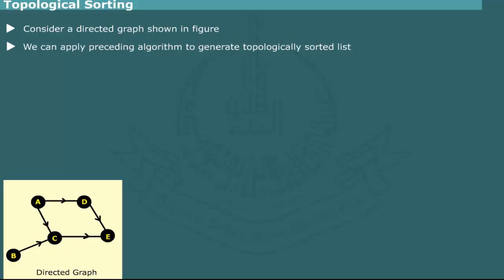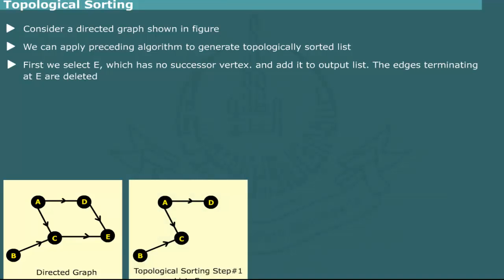Since E has no successor vertices, we select E and add it to the list. Also, we delete the edges that terminate at E. At this stage, the list contains only E.